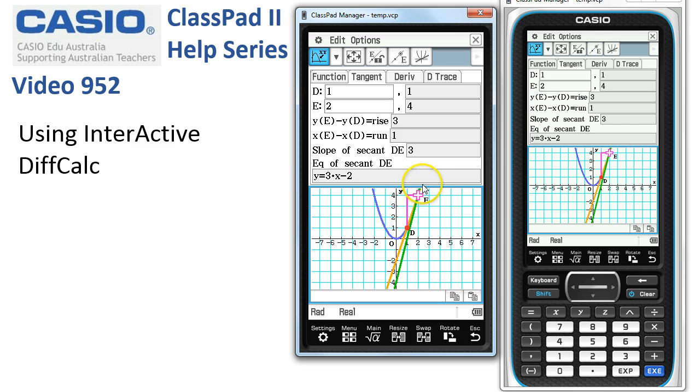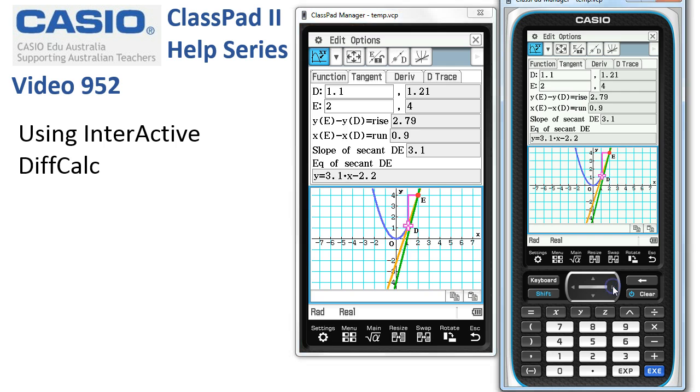Now we can select either D or E for our point. What I want to do is move D closer to E, so I'm going to tap onto D which puts the cursor there, and then using the cursor keys I'm going to tap. As D gets closer and closer to E, you can see that the secant is getting closer and closer to the tangent.